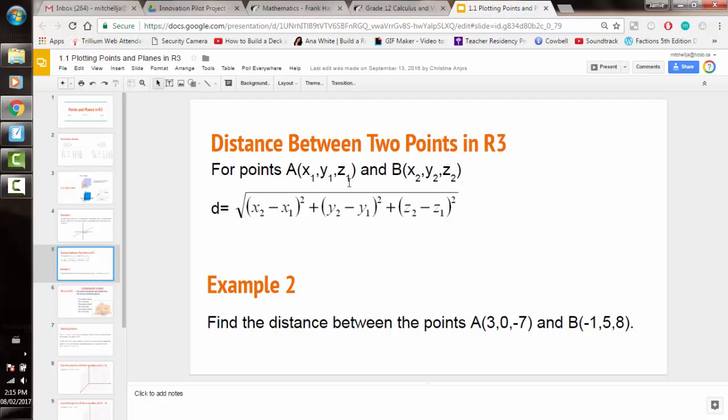To find the distance between two points in three dimensions, we're going to take the distance, the difference of the x-values squared, plus the difference of the y-values squared, plus the difference of the z-values squared, and square root the whole thing.